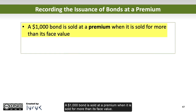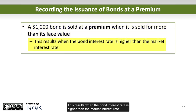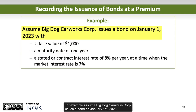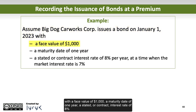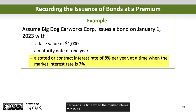A $1,000 bond is sold at a premium when it is sold for more than its face value. This results when the bond interest rate is higher than the market interest rate. For example, assume Big Dog Carworks Corporation issues a bond on January 1, 2023, with a face value of $1,000, a maturity date of one year, a stated or contract interest rate of 8% per year, at a time when the market interest rate is 7%.